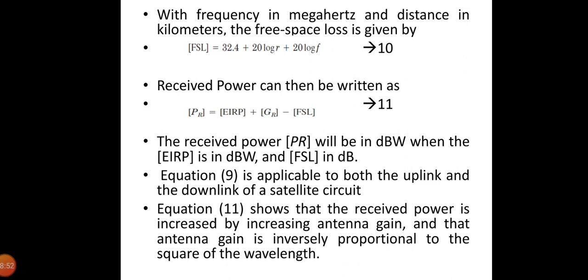This equation shows that the received power is increased by increasing the antenna gain as expected. This is a very large loss. Suppose that EIRP is 56 dBW and the received antenna gain is 50 dB. The received power would be 56 plus 50 minus 200.4, which gives minus 94.4 dBW. This is 355 picowatts. It may also be expressed as minus 64.4 dBm, which is 64.4 dB below the 1 milliwatt reference level.